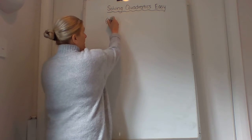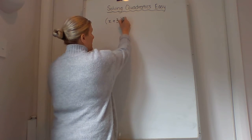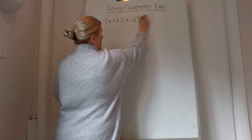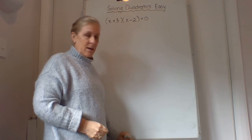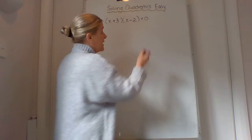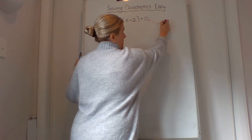So if you've got (x+3)(x-2) = 0. Now this is the most important thing: we need to always check that our quadratic equals 0.